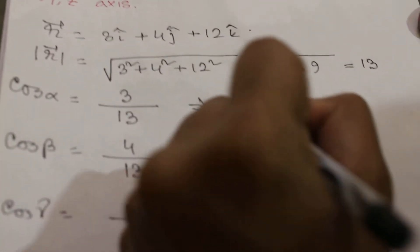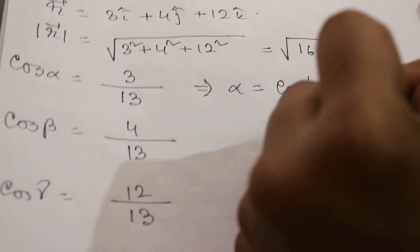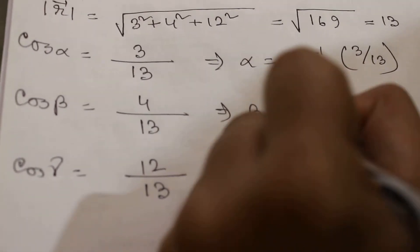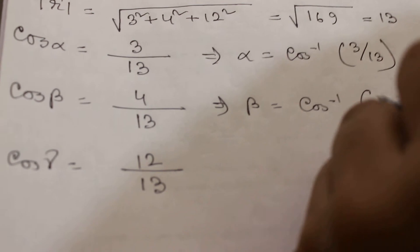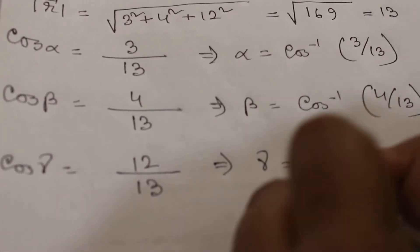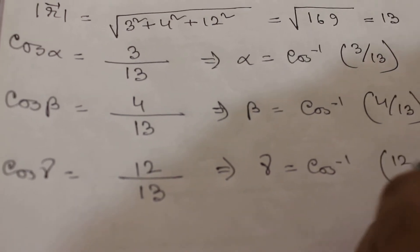So from here we can calculate alpha equals cos inverse 3 by 13, beta equals cos inverse 4 by 13, and gamma equals cos inverse 12 by 13.